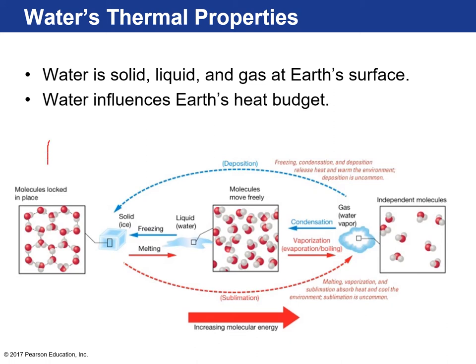In solid water — ice — the molecules form a crystal structure. When ice melts into a liquid, the molecules can move freely and still form hydrogen bonds. When a liquid turns to gas — evaporation or boiling — or sublimation (going from solid directly to gas), those processes absorb heat and cool the environment around them. So water takes heat from the environment every time it goes through one of these phase changes.